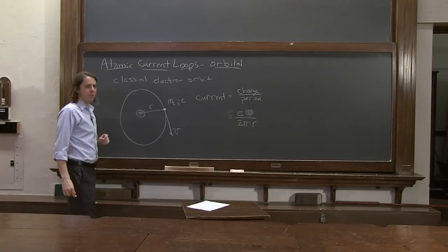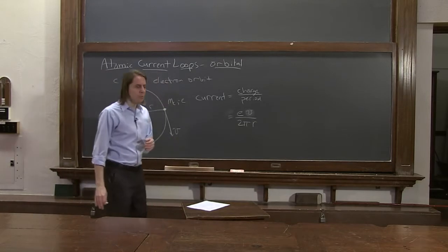So the effect of current going through this little plane, or that's inside this, that this orbital gives you, is e V over 2 pi R.